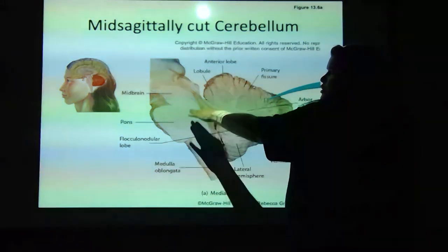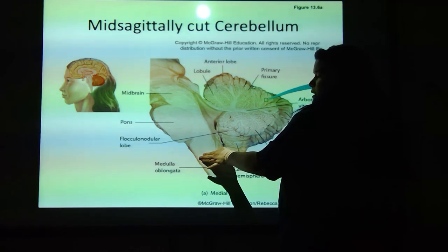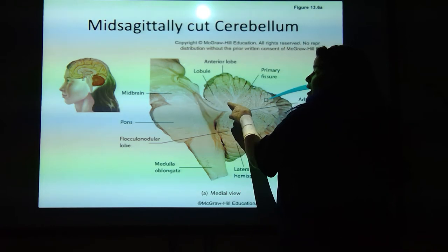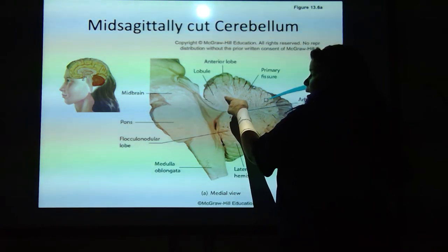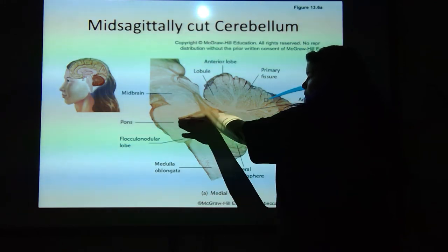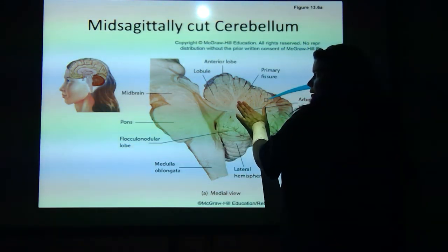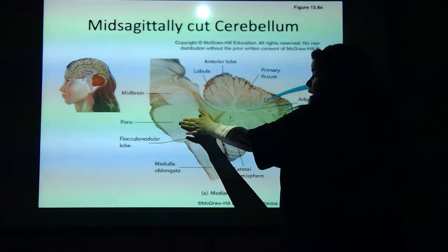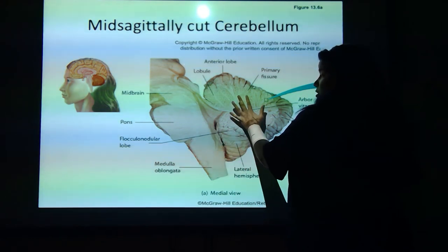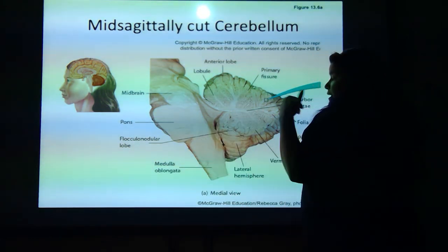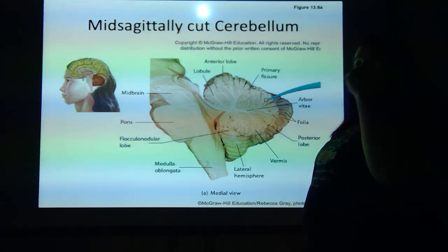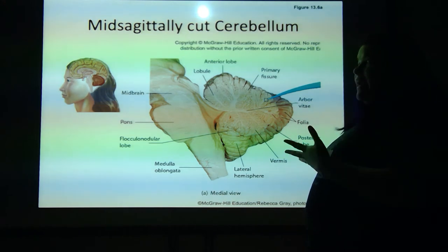Just like their location: midbrain is at the top, pons is in the middle, medulla oblongata is at the bottom. The superior cerebellar peduncle attaches the cerebellum to the midbrain. The middle cerebellar peduncle attaches the cerebellum to the pons. The inferior cerebellar peduncle attaches the cerebellum to the medulla oblongata. These are lines of communication — white matter is like a highway carrying information.